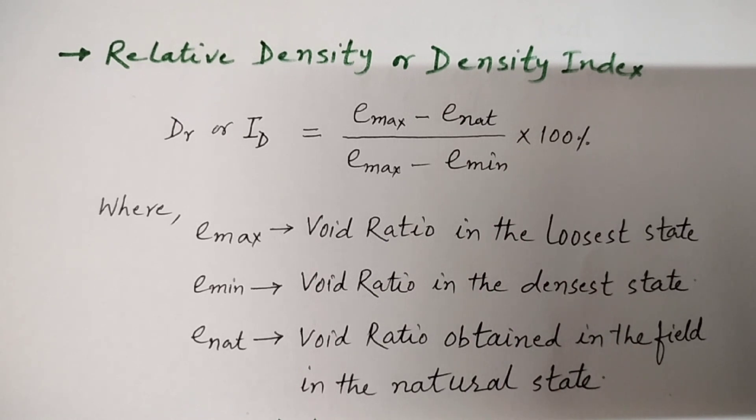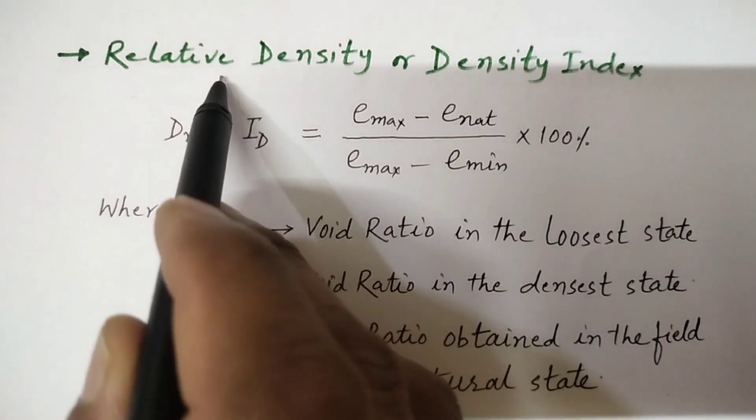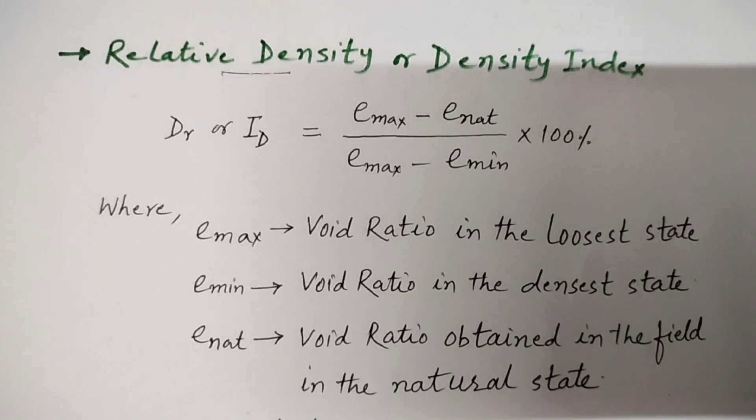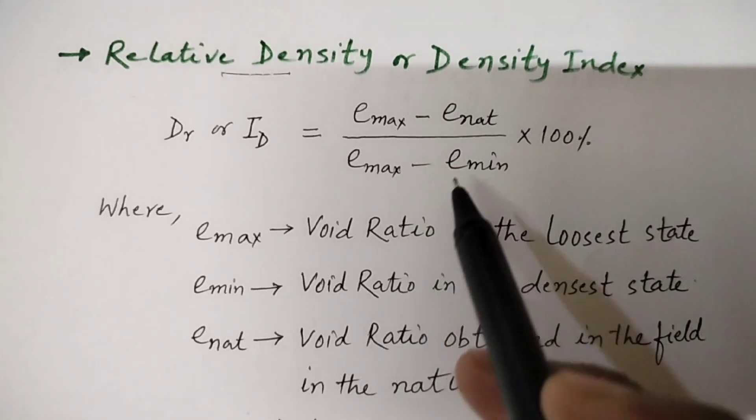Another important term is relative density or density index. The degree of denseness or looseness of natural deposit of coarse-grained soil can be measured in terms of their relative density. Relative density is, for a coarse-grained soil, the equivalent of relative consistency for clay. It is the most important soil aggregate property of coarse-grained soil.